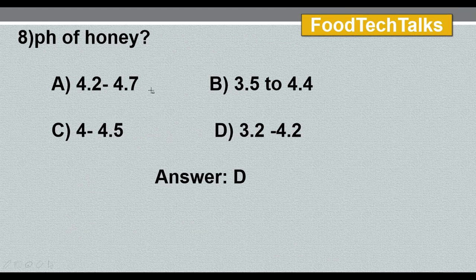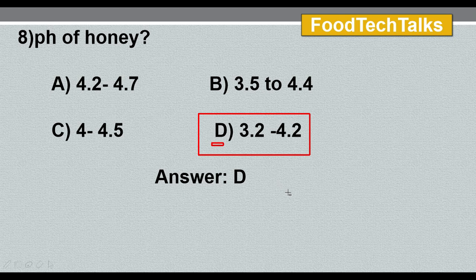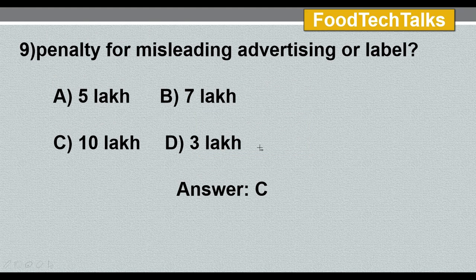Eighth question: pH of honey — options: A) 4.2 to 4.7, B) 3.5 to 4.4, C) 4 to 4.5, D) 3.2 to 4.2. The answer is option D, 3.2 to 4.2. Honey is rich in sugar content — 70 to 80% sugar — mostly monosaccharides like fructose and glucose. When bees collect nectar from flowers it contains about 70 to 80% water, but once the bee regurgitates the honey, the water evaporates and it becomes highly concentrated in sugars. Honey also has antiseptic and antibacterial properties.